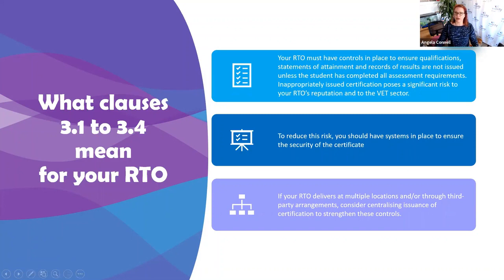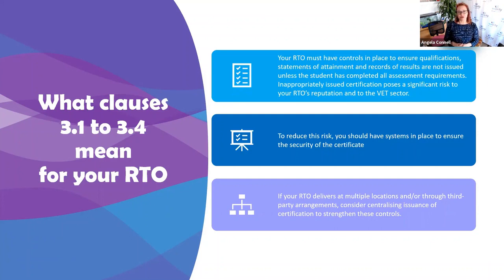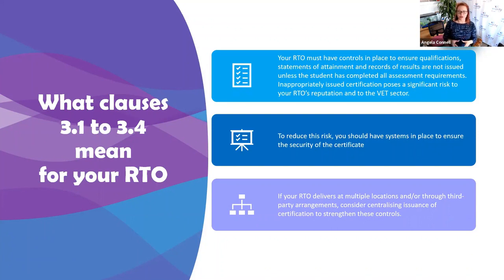To reduce risk, you should have a system in place to ensure the security of your certificates. If you use Accelerate there is an option for QR codes — that is the best security. Anyone reviewing the certificate can scan the QR code and verify it directly against your database. Some other student management systems do the same thing. If you deliver from multiple locations or use third party arrangements, you really need to look at how you're issuing your certificates.